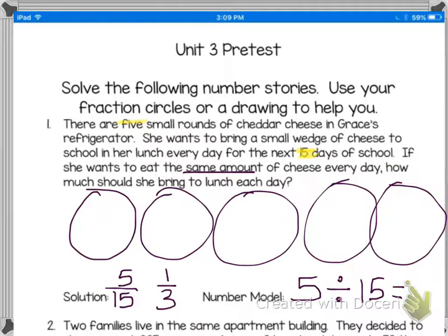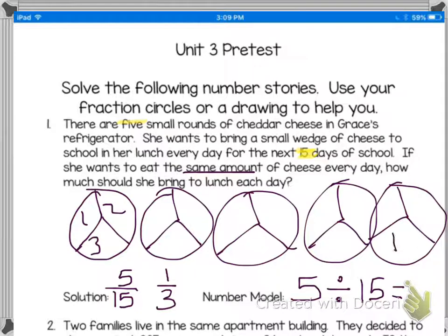My number model is I have 5 small rounds of cheddar cheese and I'm dividing it or splitting it amongst 15 days. Your solution can just be 5 over 15, or you can reduce it to 1 third. If you're using a picture to help you, you might think of it this way. I have 15 days of school and 5 things of cheese. 15 divided by 5 is 3. So if I split my cheese wheels into thirds, will I have 15 of them for each day? And I do if I count them. So on day 1, if I take this chunk of cheese, I am taking 1 third. I took my whole and I split it into 3, and I took one away, so it is 1 third.